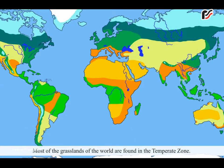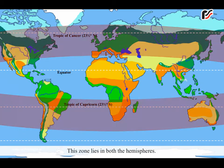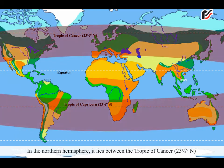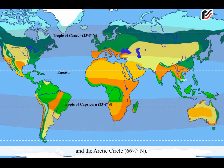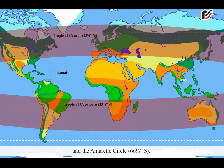Most of the grasslands of the world are found in the temperate zone. This zone lies in both the hemispheres. In the northern hemisphere, it lies between the Tropic of Cancer at 23.5 degrees north and the Arctic Circle at 66.5 degrees north. In the southern hemisphere, it lies between the Tropic of Capricorn at 23.5 degrees south and the Antarctic Circle at 66.5 degrees south.